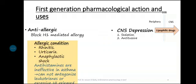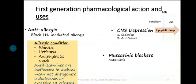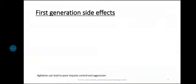First generation antihistamines are lipophilic and cross the blood-brain barrier, leading to CNS depression. This can be used therapeutically as OTC hypnotics. They can also be used as antitussives — suppressing the cough center — and for dry cough. Their anti-muscarinic effect gives them an anti-emetic action, useful in vomiting especially from motion sickness related to vestibular stimulation.